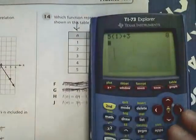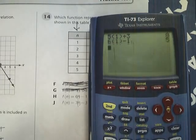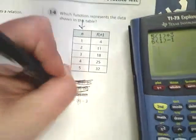6n minus 1, so I do 6 times 1 minus 1. Gives me 5, but it's supposed to give me 4, so that's out again.